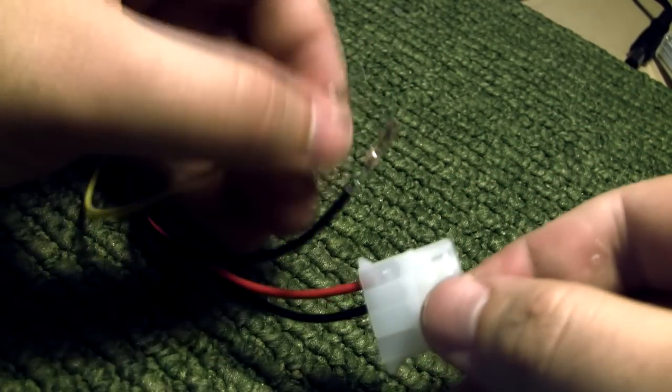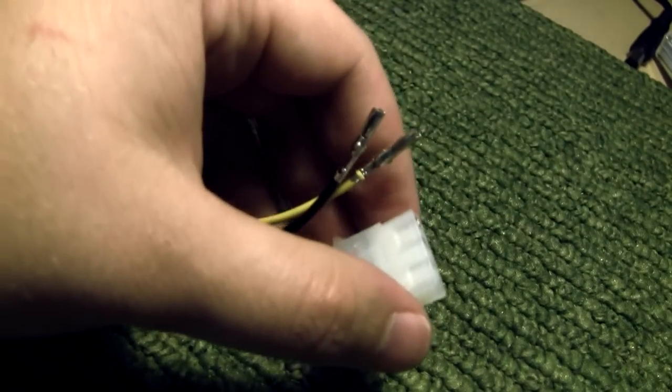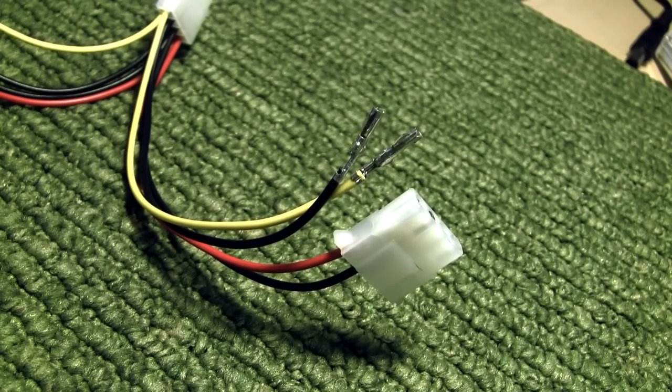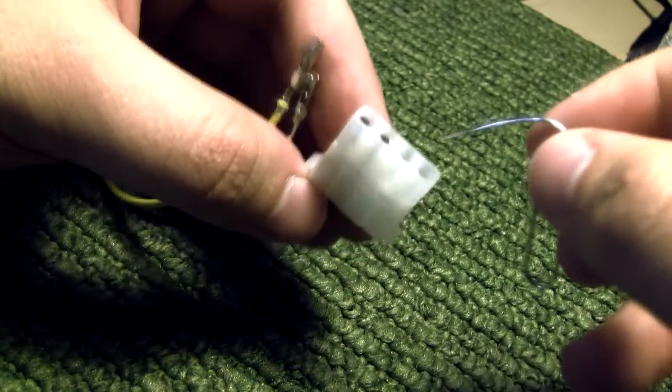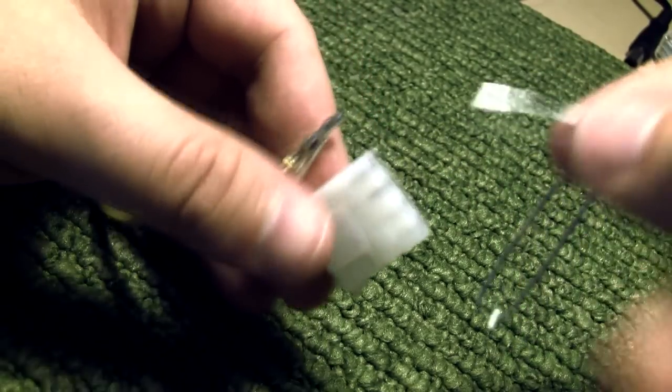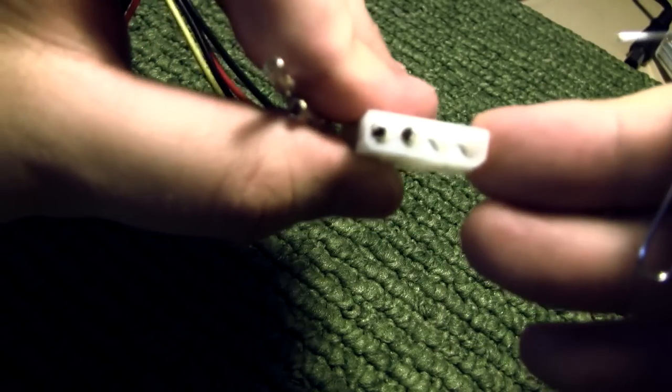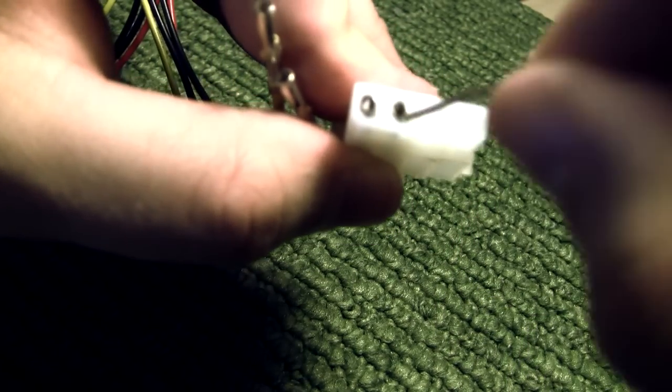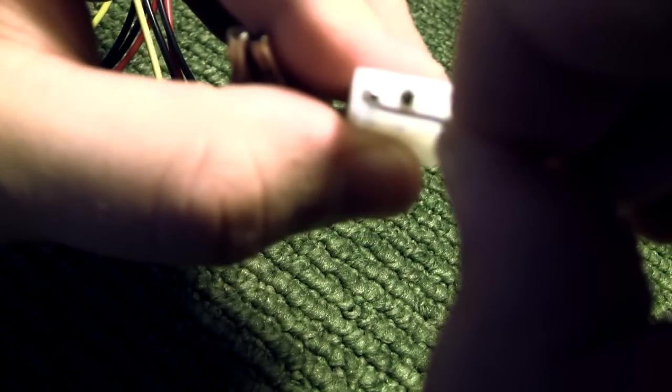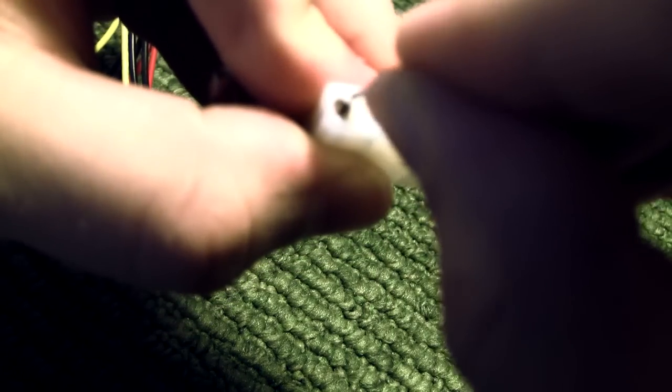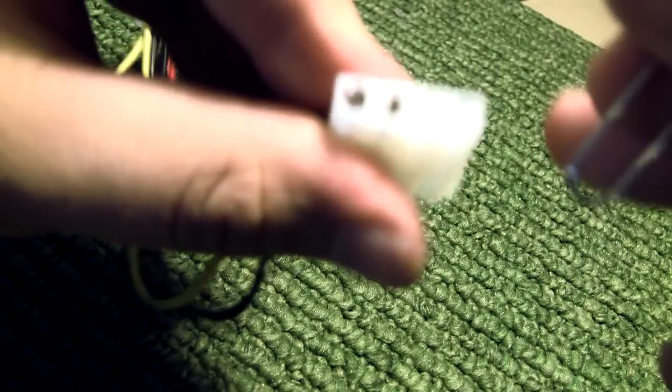So if you want to remove them from the connector itself, what I've been doing is taking something small and a little pliable like this paperclip that I've chopped up. If you look down the hole, you can see that the two little clips are what's keeping each of them in. Then you take your pin and just press those in, and it should work its way out.